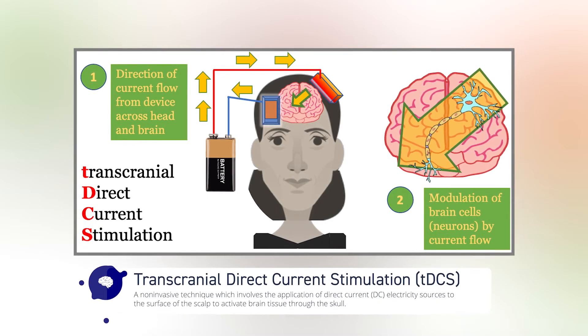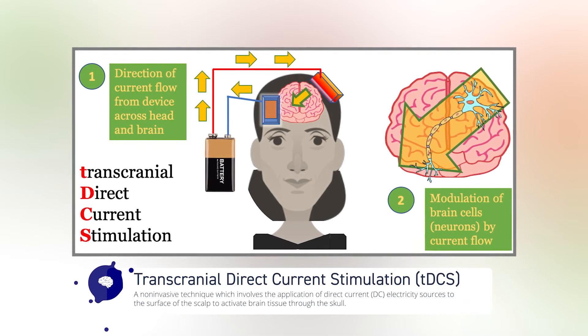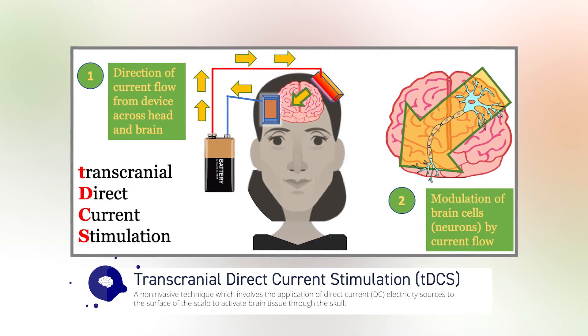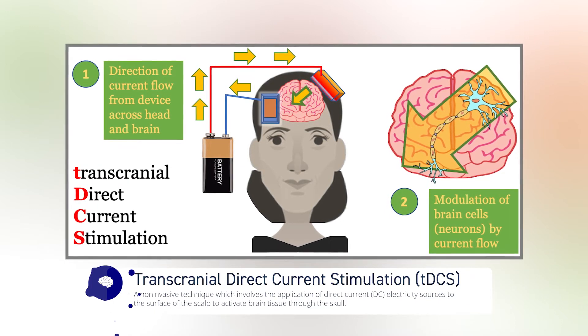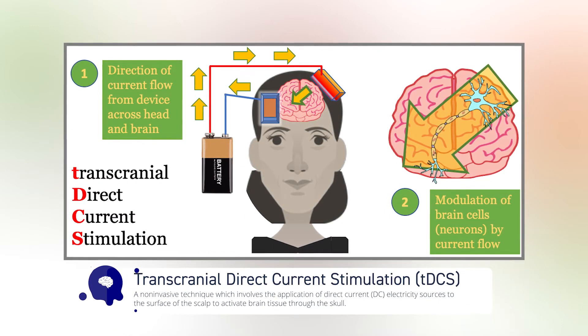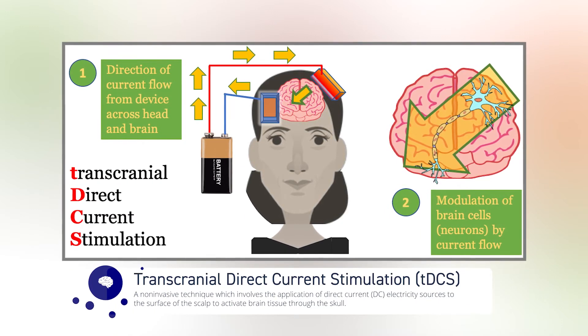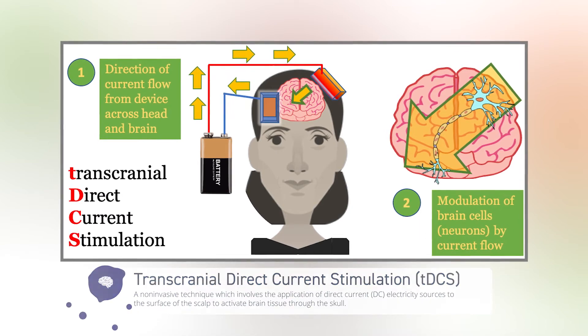Transcranial direct current stimulation, or TDCS, utilizes direct electrical currents to stimulate the brain by delivering low levels of electricity via electrodes placed on the head. The electrodes can be used to stimulate either anodally, which stimulates neurons to fire, or cathodally, which inhibits neurons from firing.